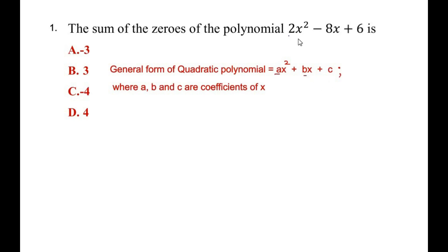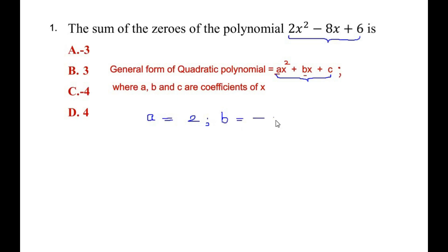Let us compare the given expression with the general form of the quadratic polynomial. With x squared we have 2, so a is equal to 2 by comparison. We have b is equal to minus 8, and in place of c, the constant, we have 6. Once we have the values of a, b, and c, let us find the sum of the zeros.